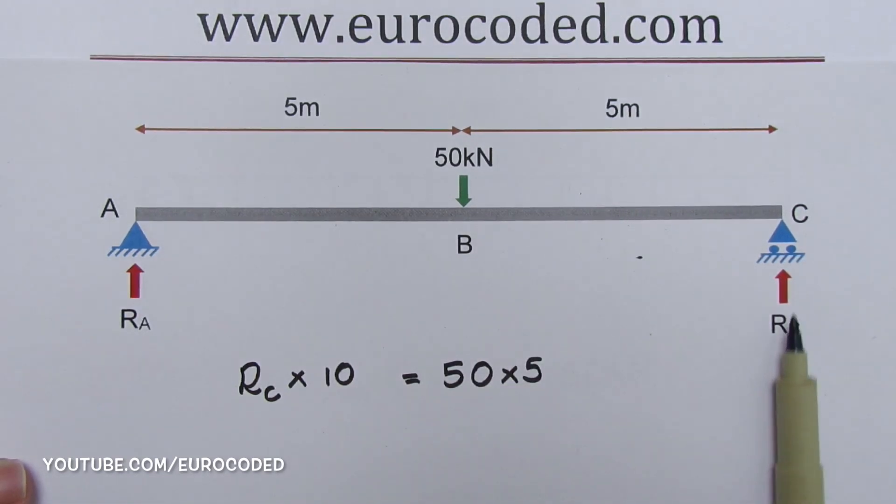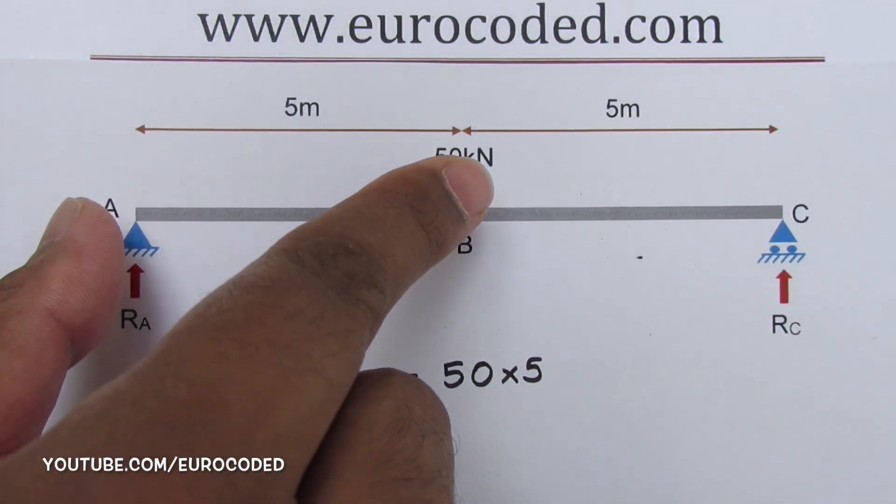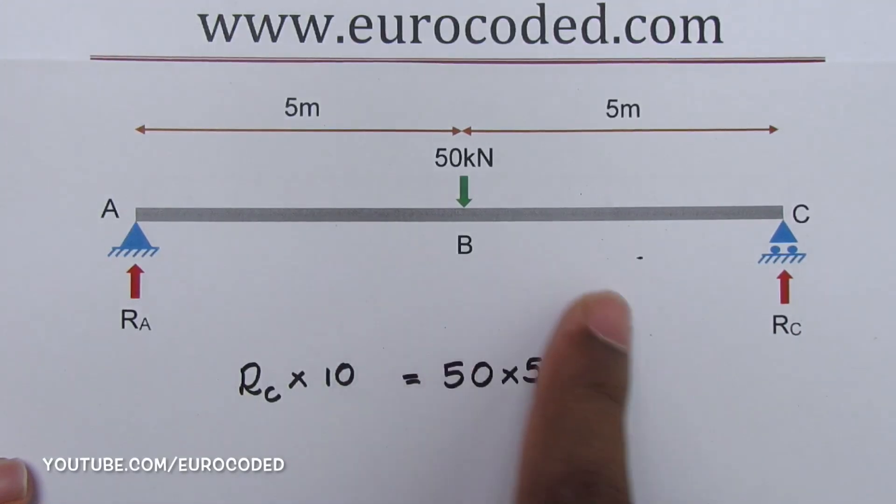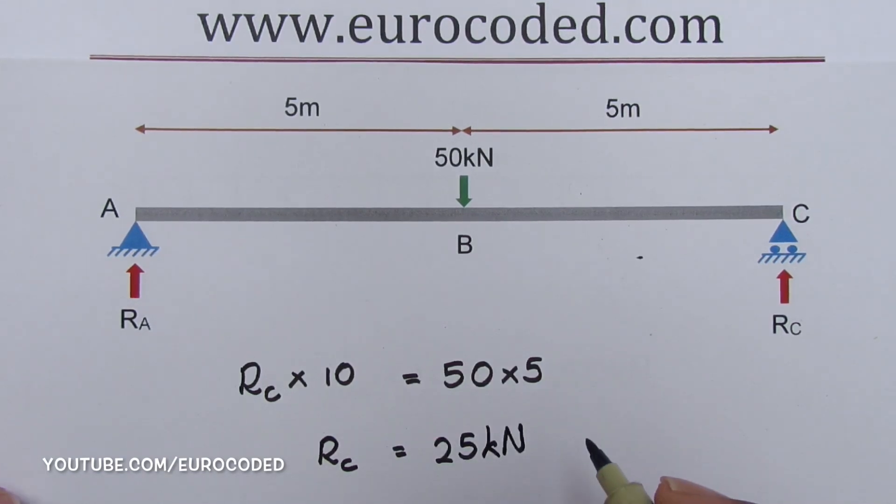RC is causing an anticlockwise moment. That's what we have on this side of the equation, and this 50 kilonewton is causing a clockwise moment and that's what we have on this side of the equation. Therefore, we can write RC is equal to 25 kilonewtons.